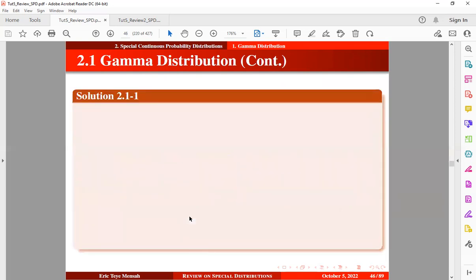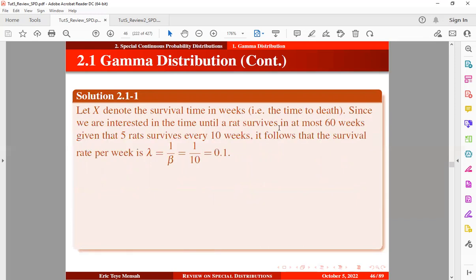So let's take a look at a solution. Let X denote the survival time in weeks, that is the time to death of a rat. Since we are interested in the time until a rat survives in at most 60 weeks, given that 5 rats survive every 10 weeks, it follows that the survival rate per week is going to be lambda, which is equal to 1 over beta, which is similar to 1 divided by 10, which is equal to 0.1.